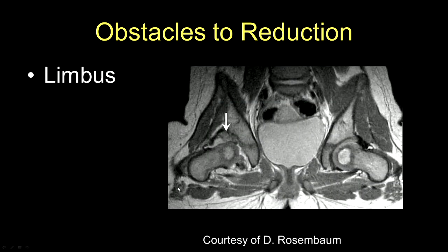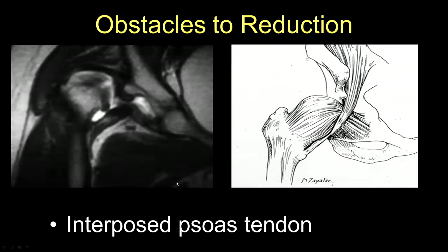Here is the limbus by MRI. And finally, this is the interposed psoas tendon — the psoas tendon interposing itself between the femoral head and the acetabulum. Here is the psoas tendon, here is the empty acetabulum, and here is the femoral head.